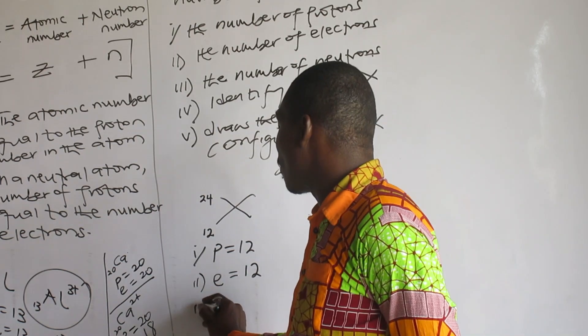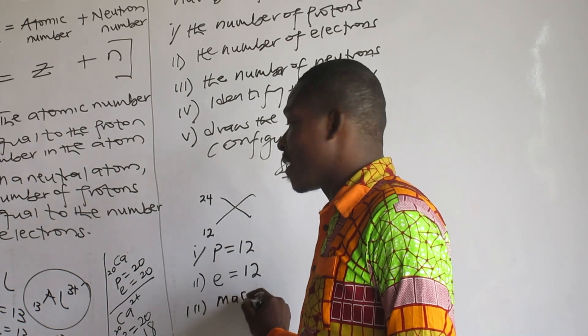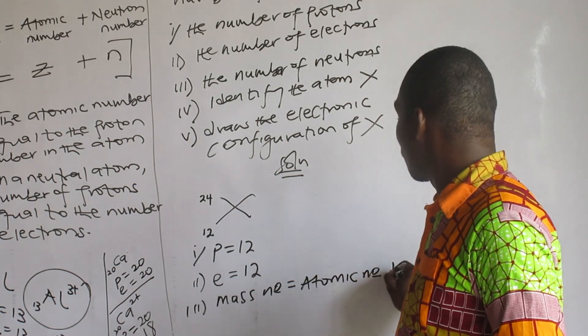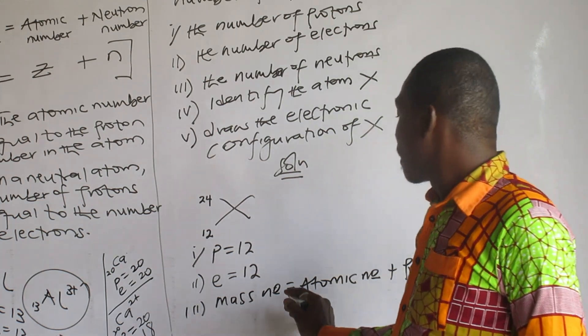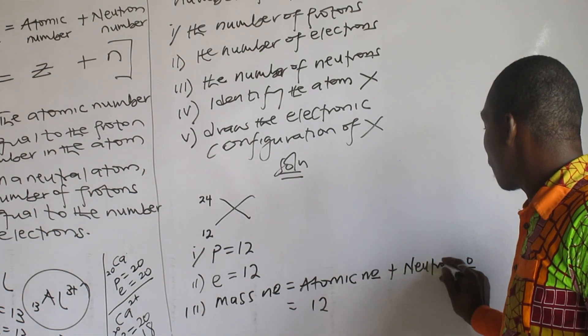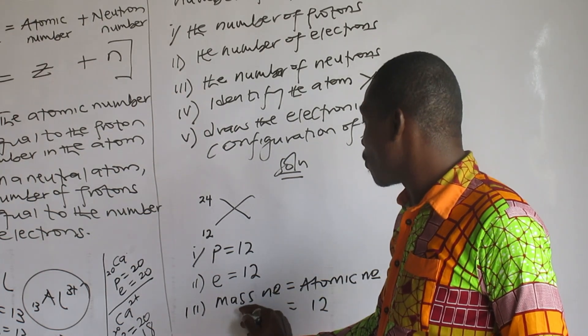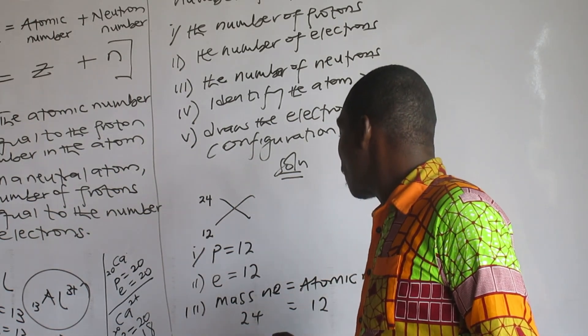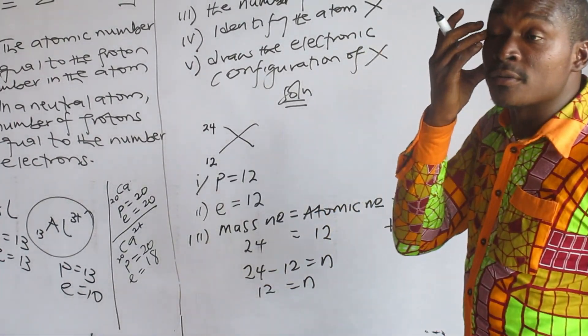I've been asked to find the number of neutrons. So for this, I will quote a formula: mass number equals atomic number plus neutron number. Atomic number is 12, neutron number I don't know, but mass number is 24. So 24 minus 12 equals N. 12 is N. The number of neutrons is 12.